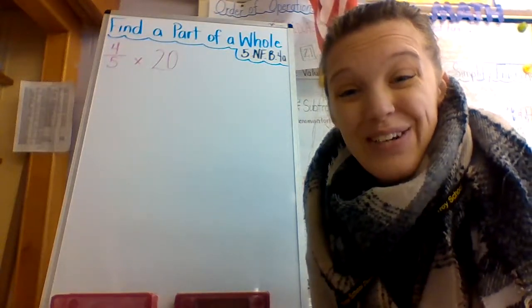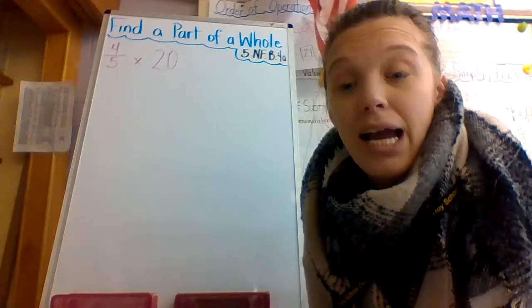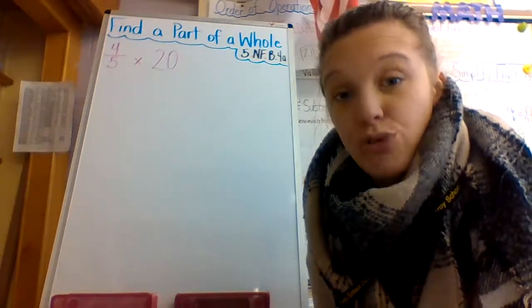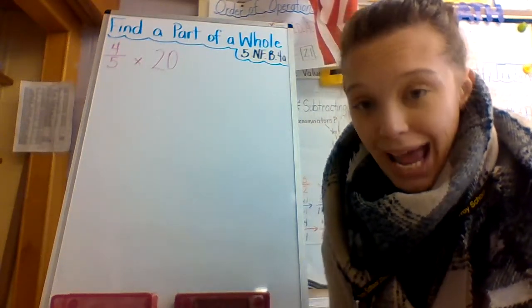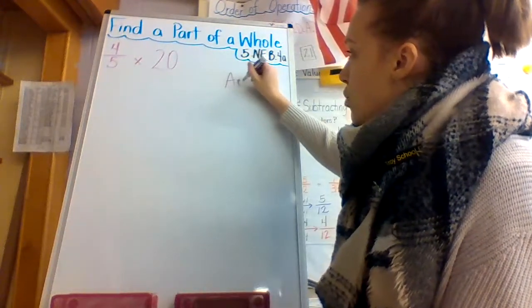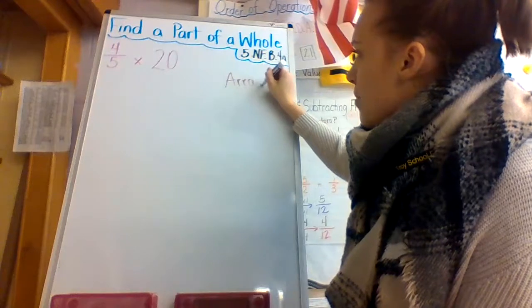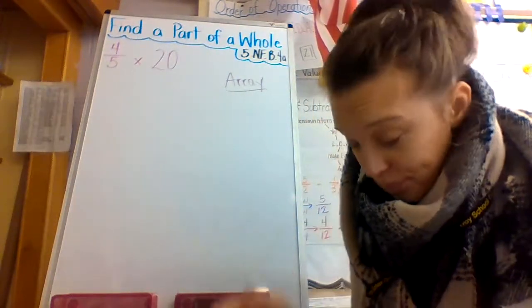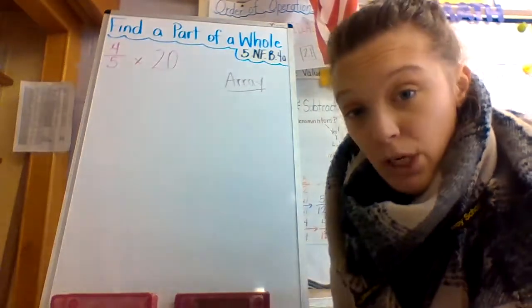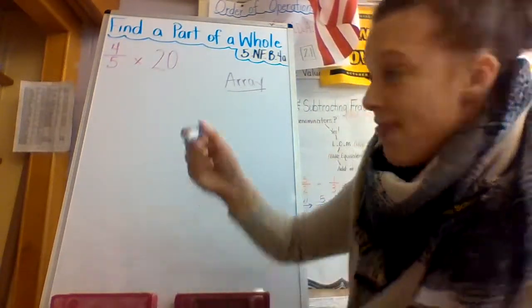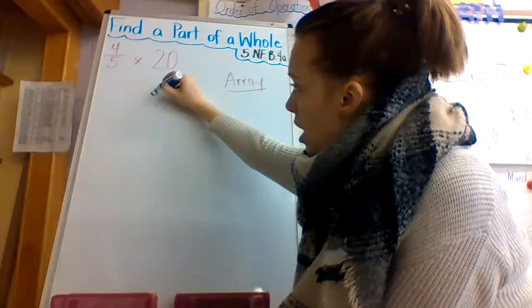So my first problem is four fifths times 20. I'm going to use a strategy called drawing an array. An array is just a visual representation of a numerical expression. So the first place I'm going to look is my denominator. I have a five in the denominator. So I'm going to draw five desks.